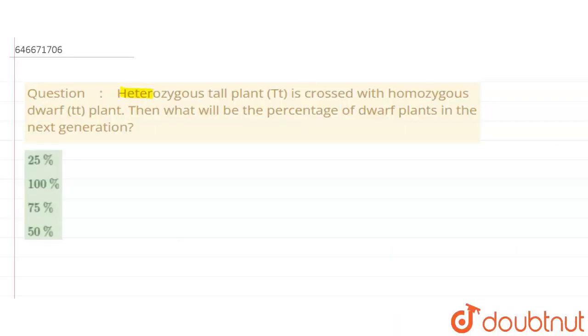The question says that heterozygous tall plant capital T small t is crossed with the homozygous dwarf, that is the small t small t plant. Then what will be the percentage of the dwarf plants in the next generation? 25 percent, 100 percent, 75 percent, or 50 percent?